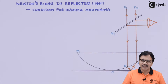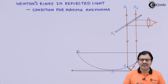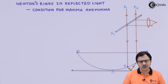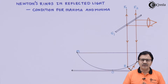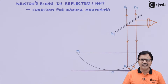When you have studied wedge-shaped film, you must have understood that the bandwidth of the wedge-shaped film pattern is uniform. But in Newton's rings, we do not have a uniform bandwidth — this is one of the most important criteria of Newton's rings.